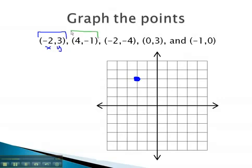Similarly, (4, -1) is 4 on the x, negative 1 on the y. 4 to the right and 1 down.